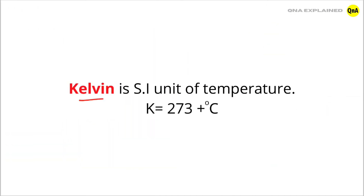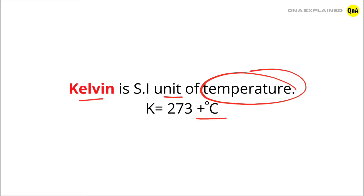Kelvin is the SI unit of temperature. K is equal to 273 plus degree Celsius. If we know the temperature in degree Celsius, then we can calculate the temperature in Kelvin by adding 273 to degree Celsius. So the formula of Kelvin is K is equal to 273 plus degree Celsius.